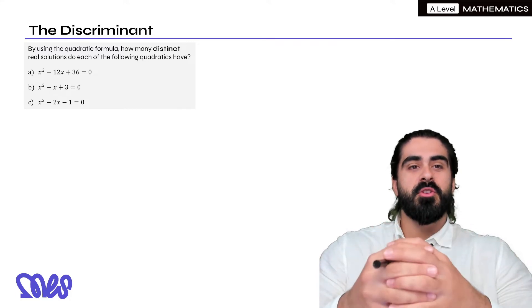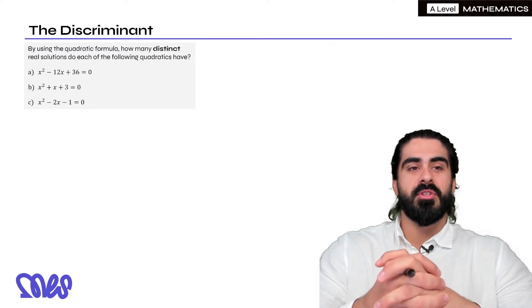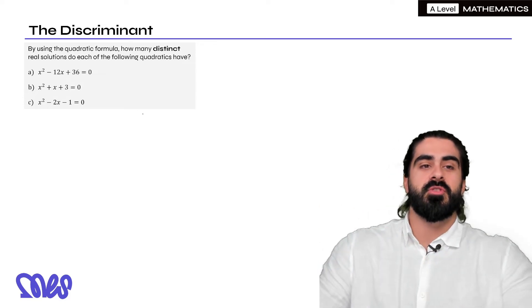By using the quadratic formula, how many distinct real solutions do each of the following quadratics have?